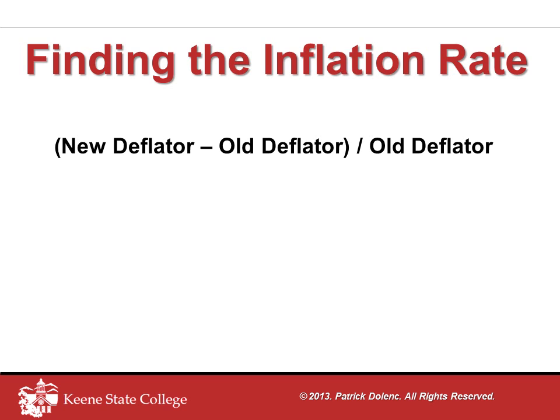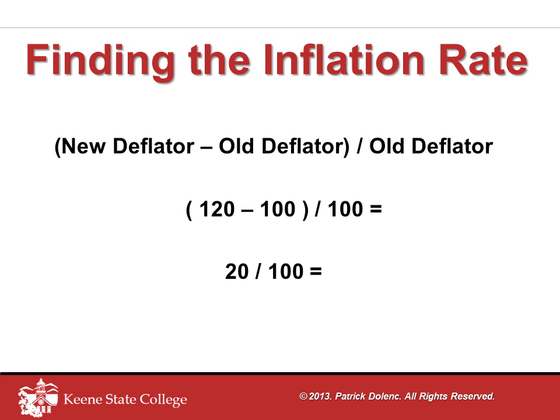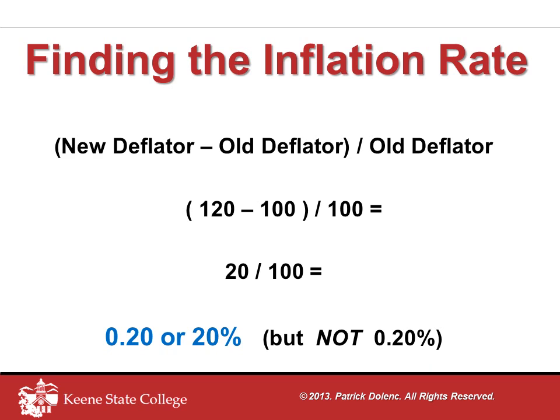To find the inflation rate for year 2, we'll take the year 2 deflator value of 120, subtract the year 1 deflator value of 100 — we have those in parentheses because we need that subtraction to happen first — then divide by the year 1 deflator, which is 100. 20 divided by 100 gives us 0.2. You could also express this as 20%. But you should not combine the percent sign with the decimal — anyone who records the final answer as 0.20% has stumbled at the finish line and ended up with an inaccurate result.